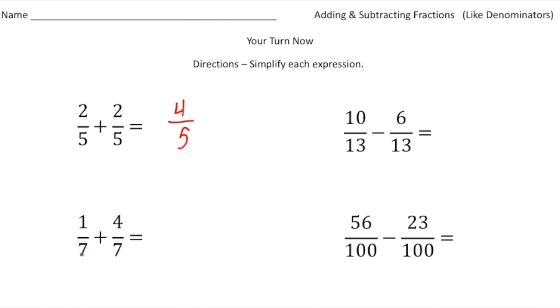The next one, one seventh plus four sevenths, that would be five sevenths. Here's our first subtraction problem. Ten thirteenths take away six thirteenths will be four thirteenths. That's already reduced.